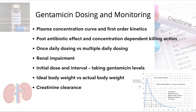I'm talking about gentamicin dosing and monitoring, what the plasma concentration curve for gentamicin looks like, the concept of post-antibiotic effects and concentration-dependent killing action of gentamicin, once daily dosing and why it's used versus multiple daily dosing, renal impairments, the principle behind deciding the initial dose and interval and taking gentamicin levels, and ideal body weight versus actual body weight and creatinine clearance. These are all going to be time-stamped in the description below.